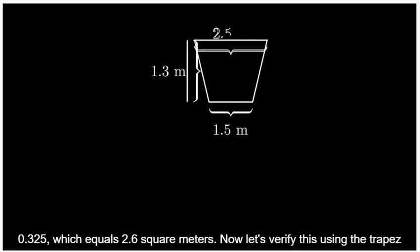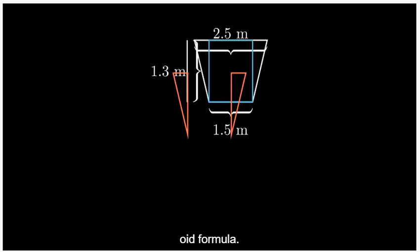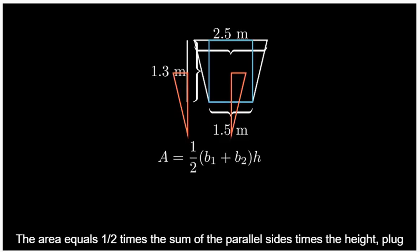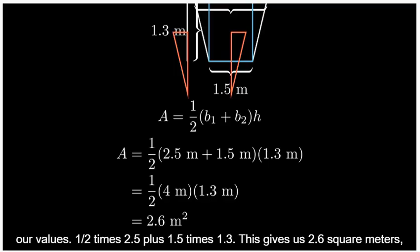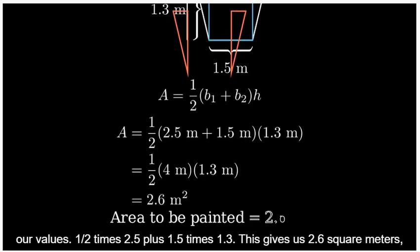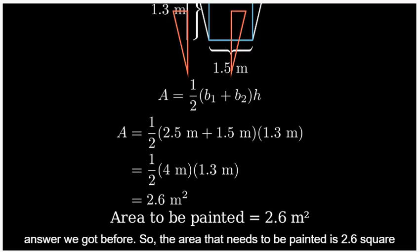Now let's verify this using the trapezoid formula. The area equals 0.5 times the sum of the parallel sides times the height. Plugging in our values, 0.5 times (2.5 plus 1.5) times 1.3. This gives us 2.6 square meters, the same answer we got before.